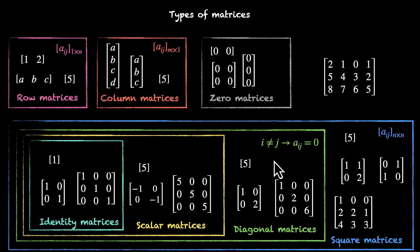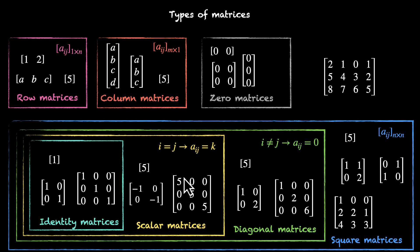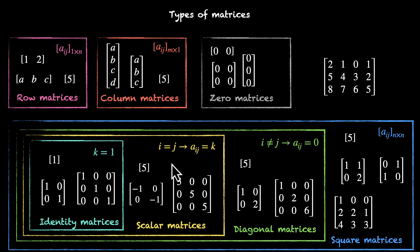On top of the diagonal matrix conditions, there's one more condition for a scalar matrix: if the row number and column number match — if you're on the diagonal — then you have to be a constant K. All diagonal elements will be the same: in one case all fives, in another all minus ones. Finally, this constant becomes one when we're talking about identity matrices. So an identity matrix satisfies all four conditions: it is a square matrix, elements not on the diagonal are zero, elements on the diagonal are all the same constant, and that constant is equal to one.